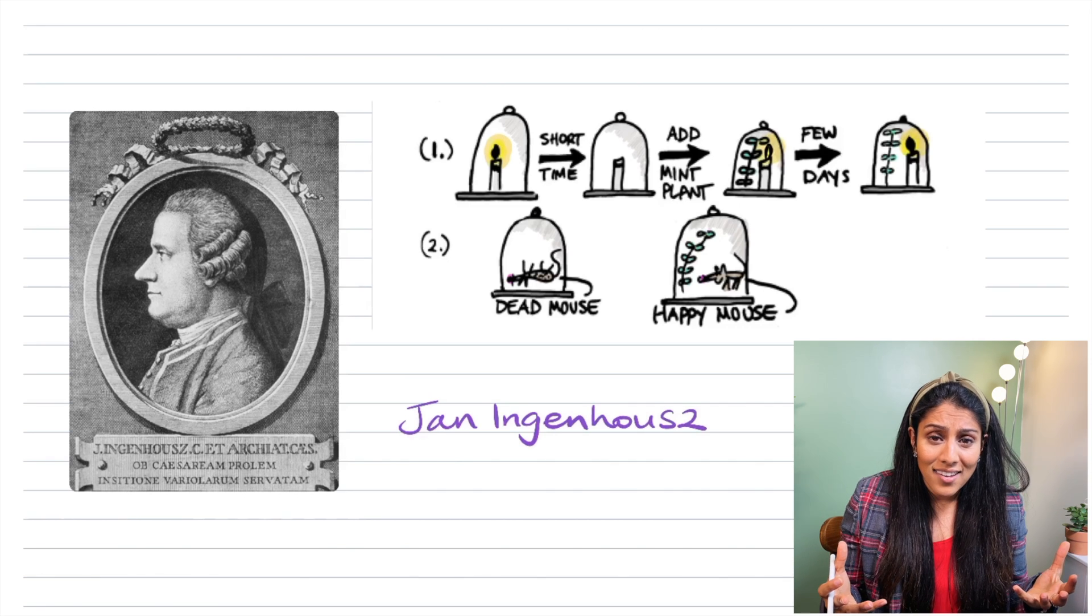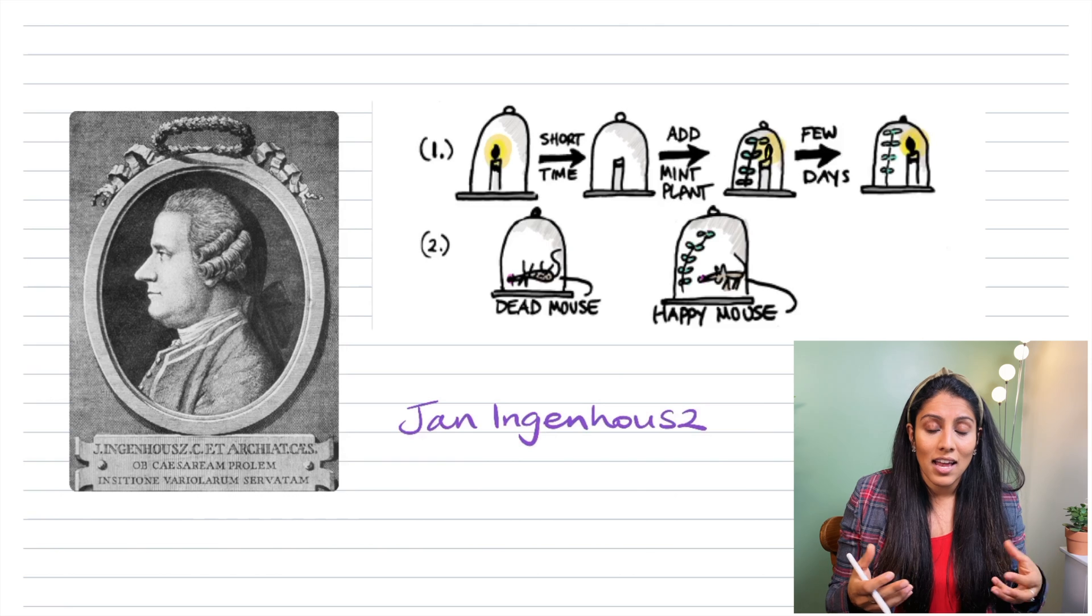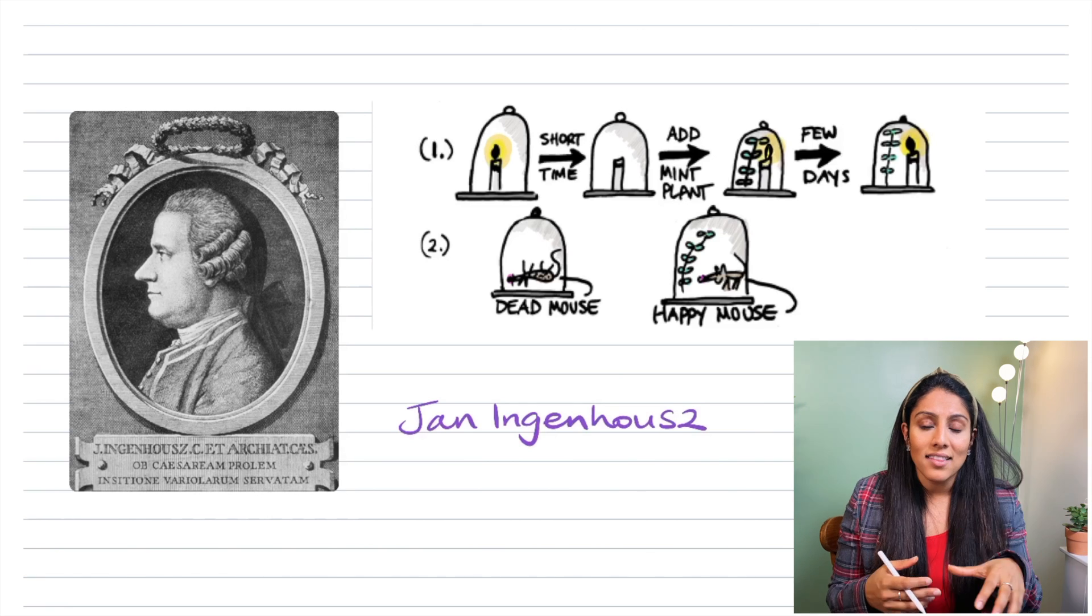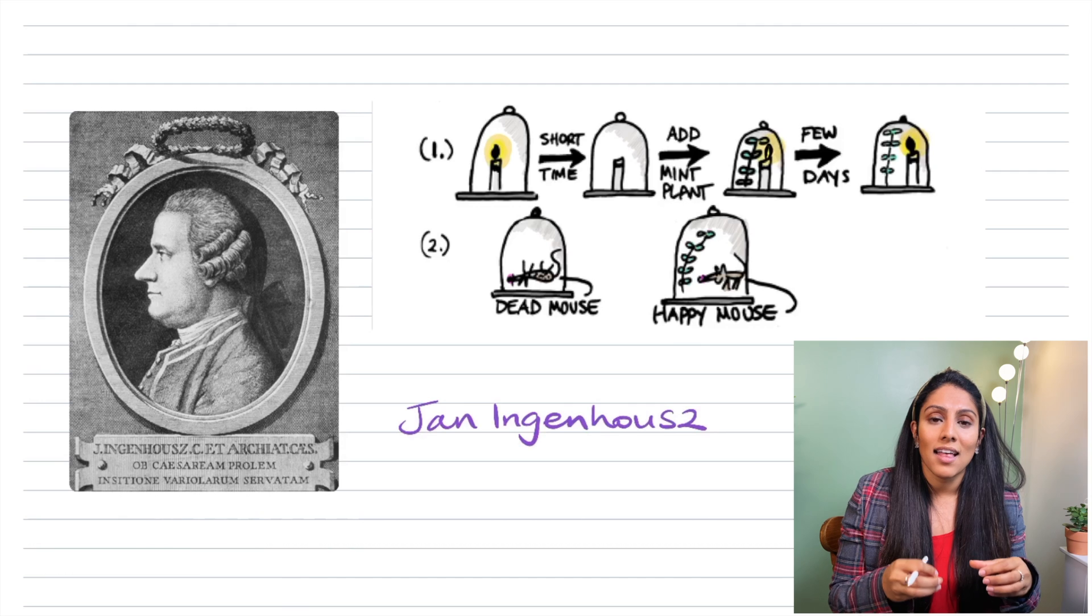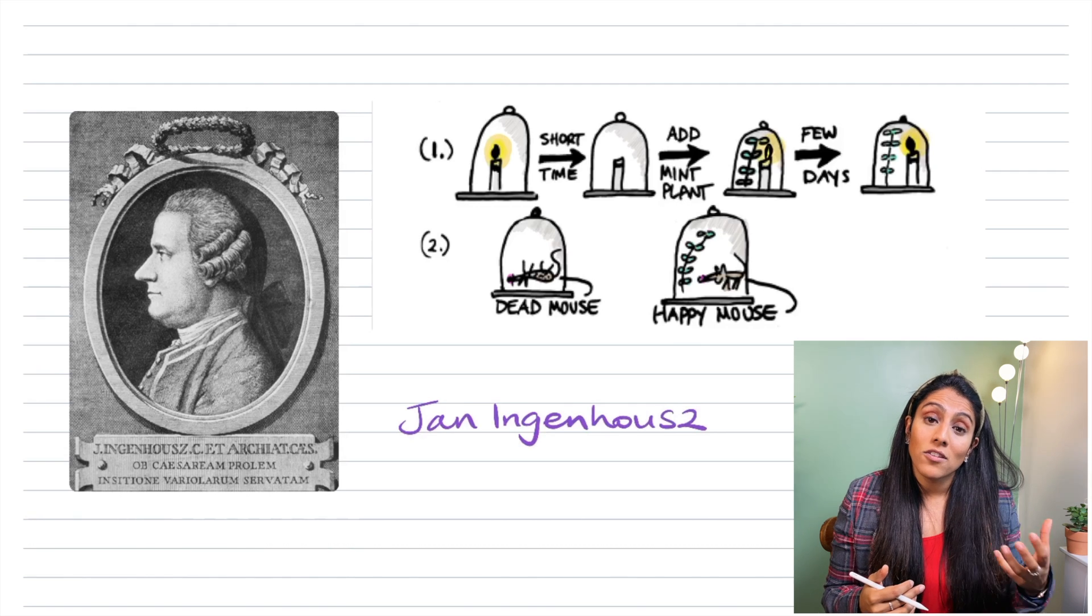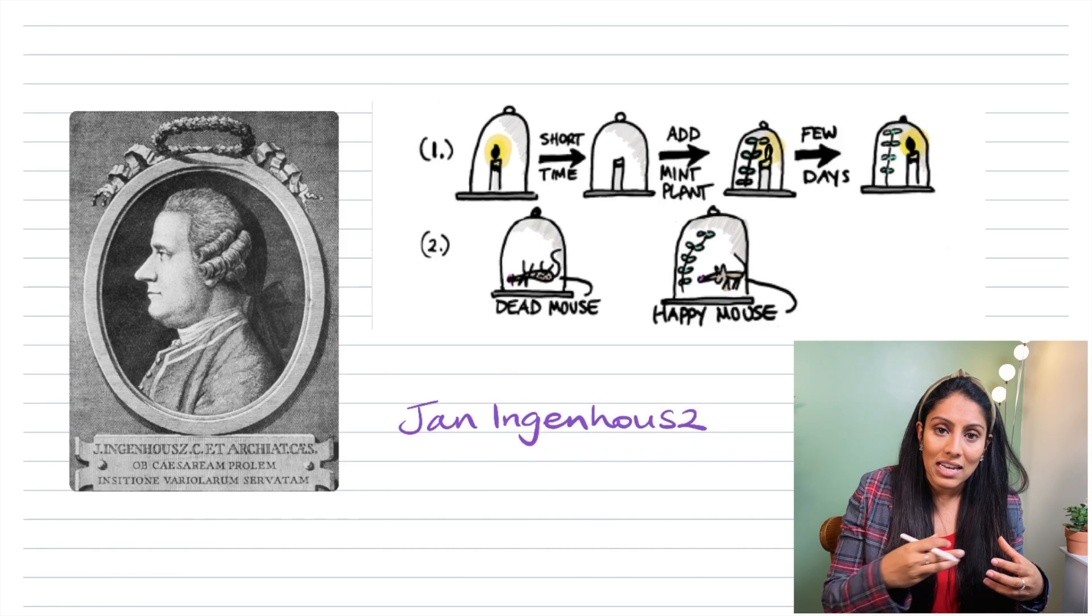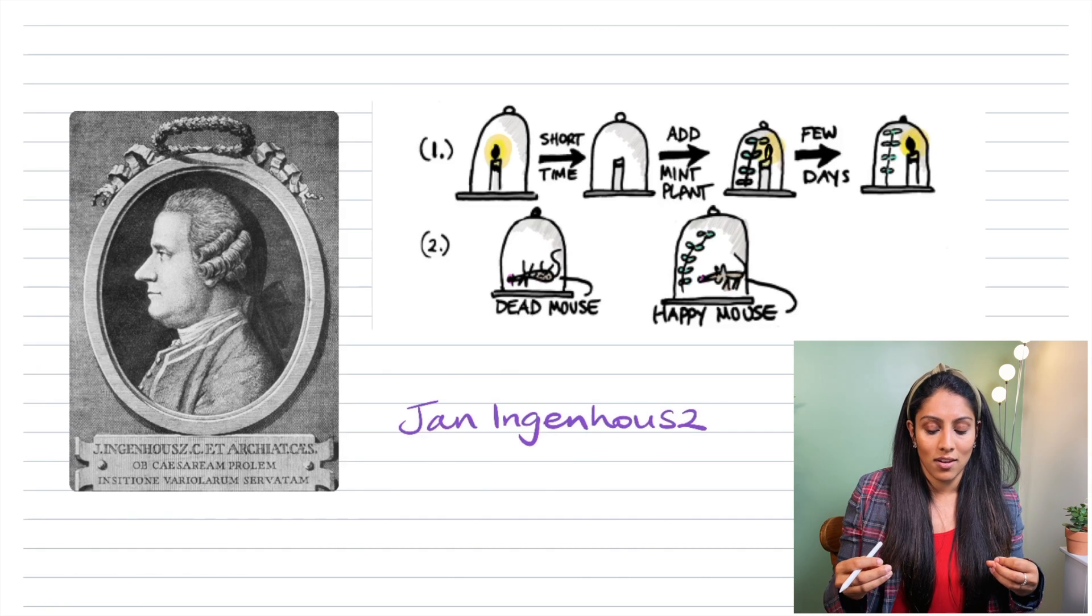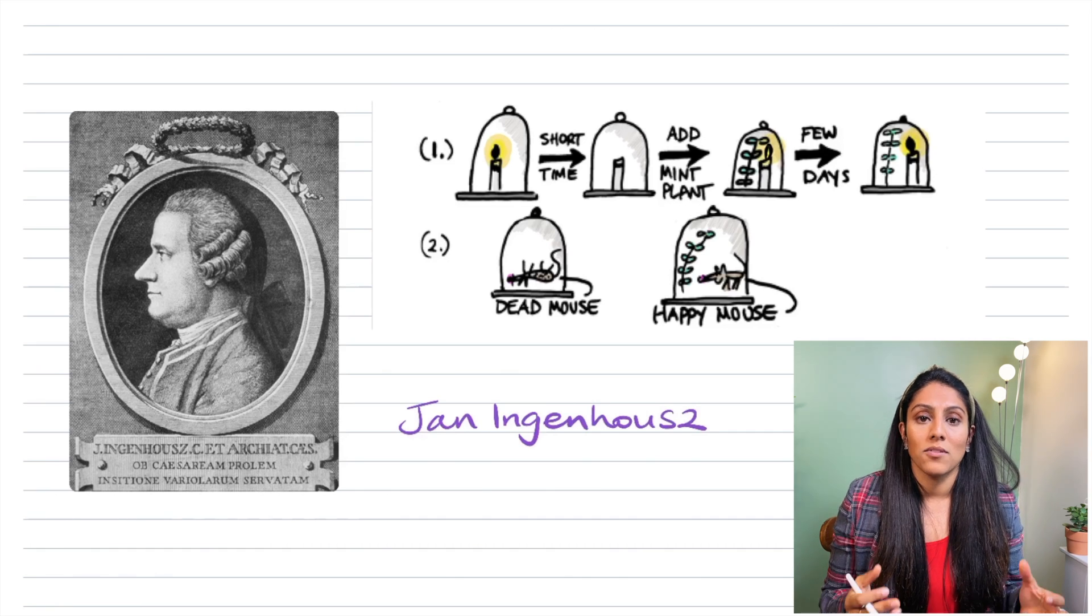The mouse suffocated in there because there was no oxygen. He then took a mint leaf, added that to the bell jar and the next mouse that was in that bell jar survived. That's when he recognised that photosynthesis was happening and the plants were releasing oxygen for the mouse to be able to take it in.